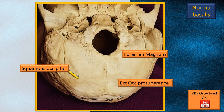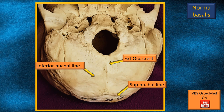At the posteriormost end is a very prominent midline landmark: the external occipital protuberance. Raising as a ridge on either side from here is the superior nuchal line. There is a vertical line called the external occipital crest running down from the external occipital protuberance to the foramen magnum. Roughly midway, another transverse ridge called the inferior nuchal line emerges on either side.